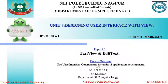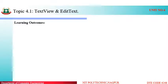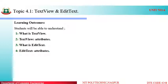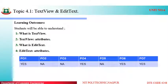Today's topic is 4.1, that is text view control and edit text. The course outcome of the fourth unit is to use user interface components for Android application development. The learning outcomes of this video include: what is text view, a brief introduction to the text view control, different attributes related to text view, a basic introduction to edit text control, and the attributes of edit text. Text view and edit text are related to each other in many ways. POs mapped are PO1, PO4, PO6, and PO7.